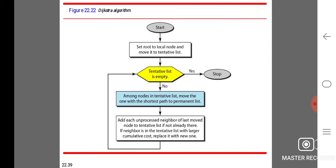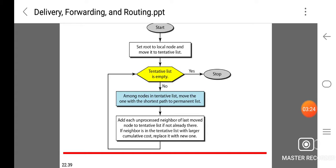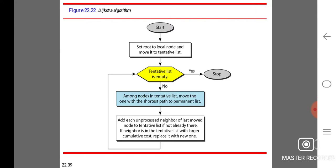Dijkstra's algorithm: Start, next set route to local node and move it to the tentative list. If the tentative list is empty, if node is yes then stop, and if no then it continues. Among the nodes in the tentative list, move the one with the shortest path to permanent list. Add such unprocessed neighbor of last node to tentative list if not already there. If neighbor is in the tentative list with a larger cumulative cost, replace it with the new one.